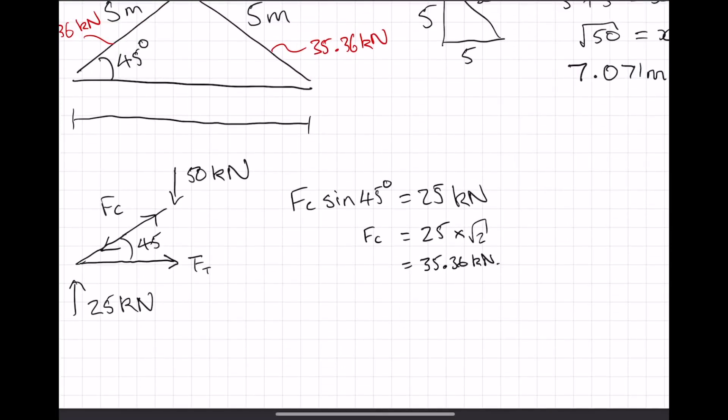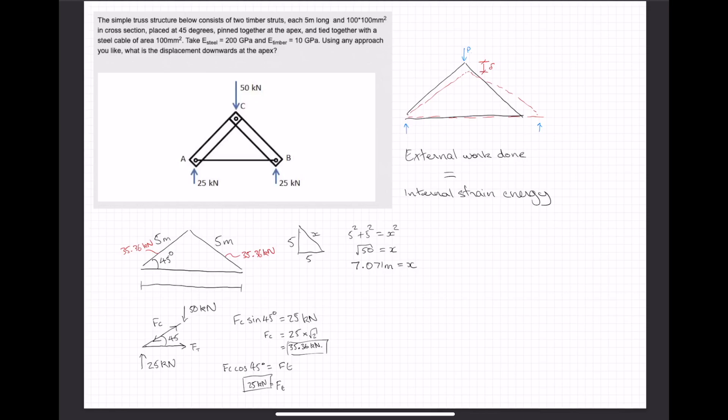And Ft, well, we know that by resolving horizontally, Fc cos 45 degrees is equal to Ft. We know sine 45 and cos 45 are the same thing, so Ft is equal to 25 kilonewtons.